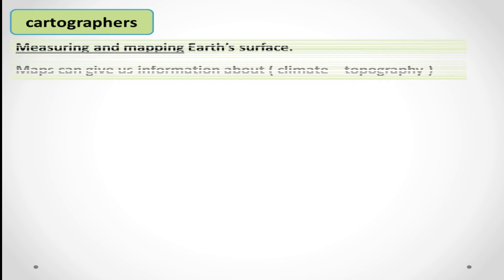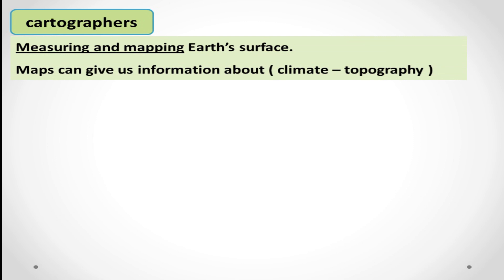The last job in our examples is cartographers — الكارتوغرافيين — who make maps for us by measuring and mapping Earth's surface. Maps can give us information about climate and topography. Topography refers to the features of an area — mountains, valleys, oceans, and seas — in different countries.